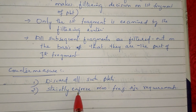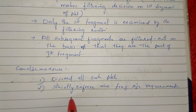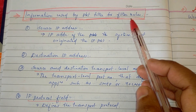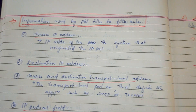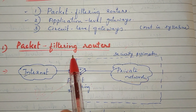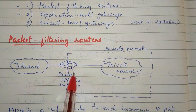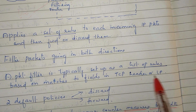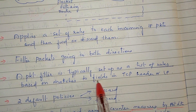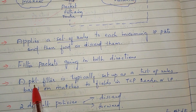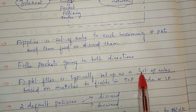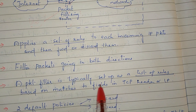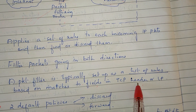You have to enforce the packet size to a strict minimum. The packet filter is based on a list of rules. In the TCP header field and the IP field, the fields might match these rules. The packet filter is typically set up as a list of rules based on matches to the IP field or TCP header field.